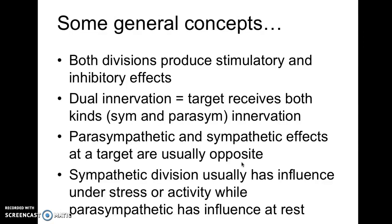This is much finer control than we see in the somatic nervous system, where there's just a single motor neuron going to the effector with a single neurotransmitter — it's a little bit like we can only turn it on and off. In the autonomic nervous system, we have more fine control. The sympathetic division is our fight-or-flight division, and the parasympathetic division is our rest-and-digest division.